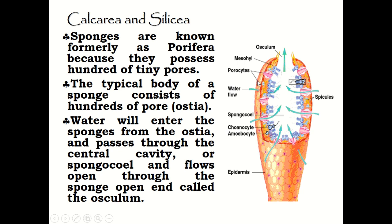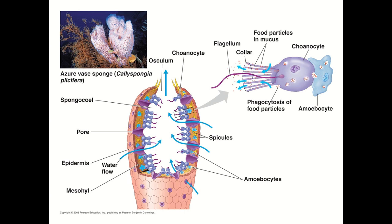Sponges are known as Porifera because they possess hundreds of tiny pores called porocytes. The typical body of a sponge consists of hundreds of pores or ostia. Water enters the sponge through the ostia, passes through the central cavity called the spongocoel, and flows out through the osculum.